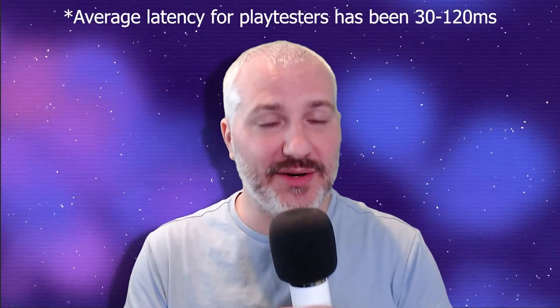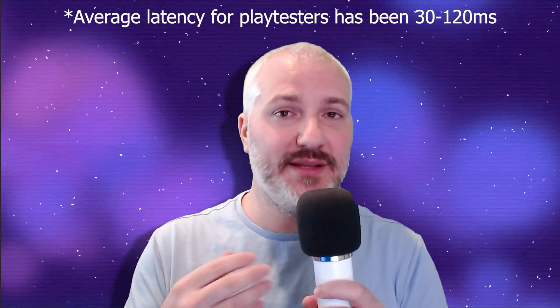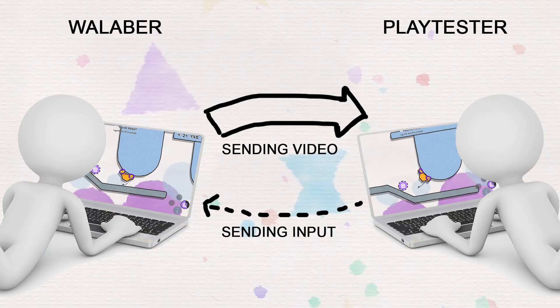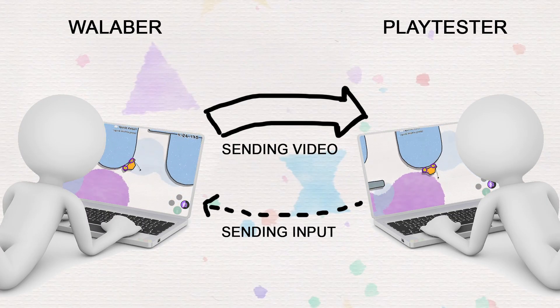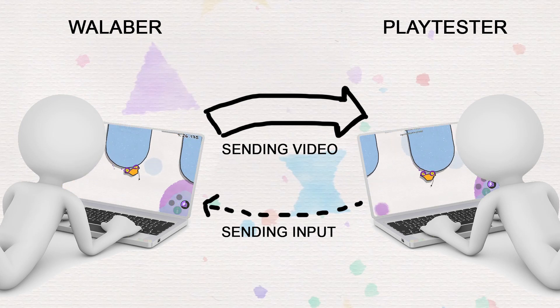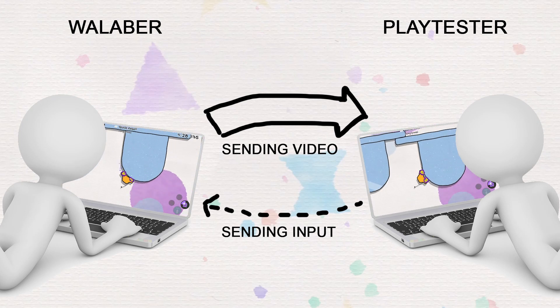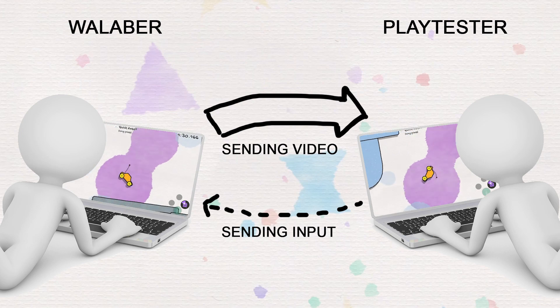The most common question about this is: what about lag? JellyCar is an action platforming game where responsive controls are really important, and so far the experience has been fantastic. It does take a little effort to adjust the settings on Parsec, things like reducing the bandwidth or the resolution. Generally what's important is the upload speed of you, the developer, because you will be streaming the video to the player. On the player side, they're just sending inputs so their internet connection speed is actually less important. Overall I've been doing it for several weeks now and the results have been great.